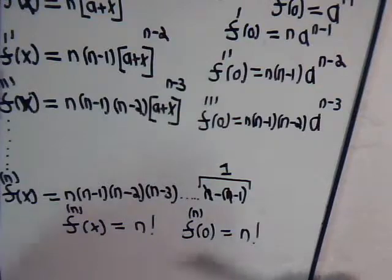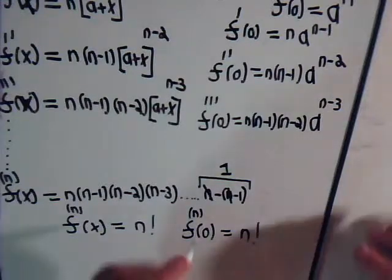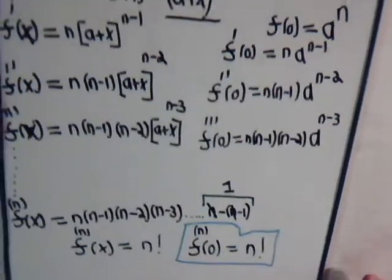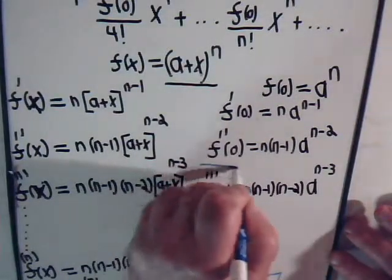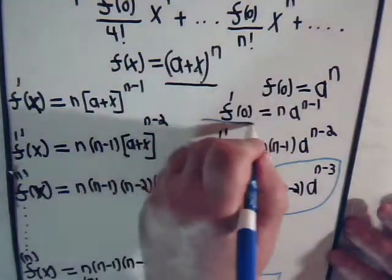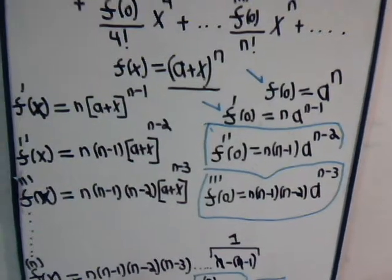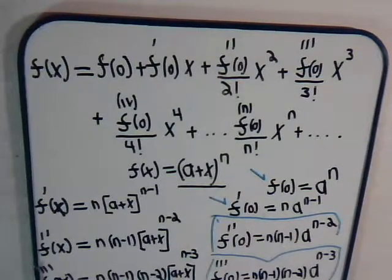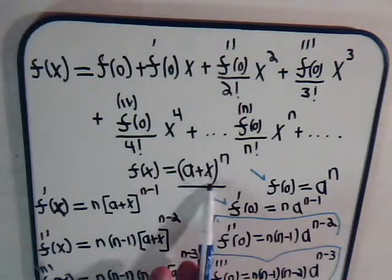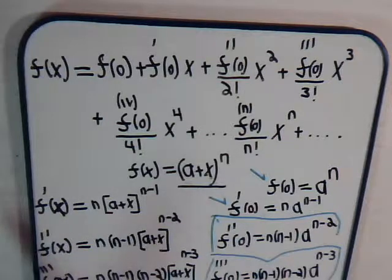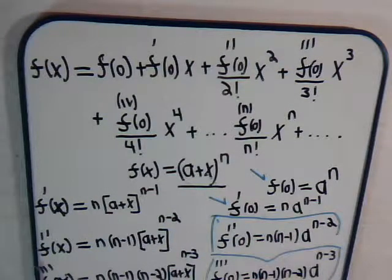We've now determined all the necessary values: f of zero, f prime of zero, f double prime of zero, and the nth derivative. What we need to do next is take those values and plug them into the Taylor series formula to get the full power series expression for this function. We'll do that in the next video, putting all the pieces together to see what expression we get.